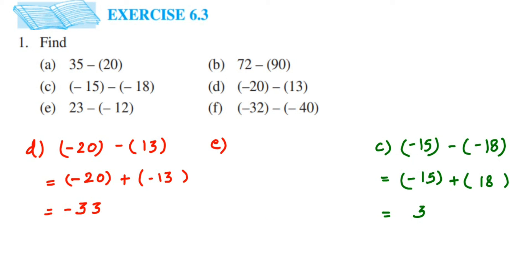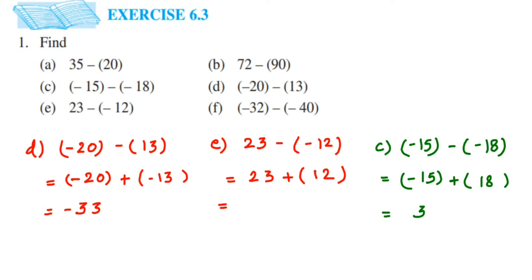The next one is 23 minus (minus 12). The first integer remains 23. Instead of subtraction, we add the additive inverse of minus 12, which is 12. So it becomes 23 plus 12. Both integers are positive — same sign means addition. 23 plus 12 equals 35, and since both are positive, the answer is plus 35, or simply 35.